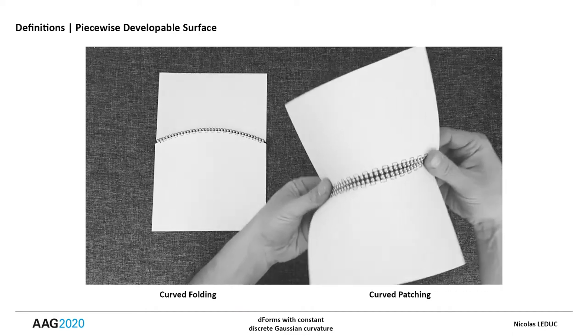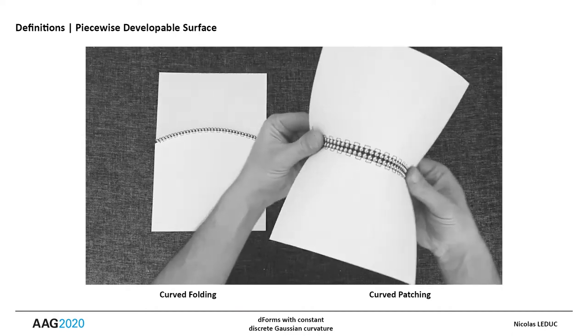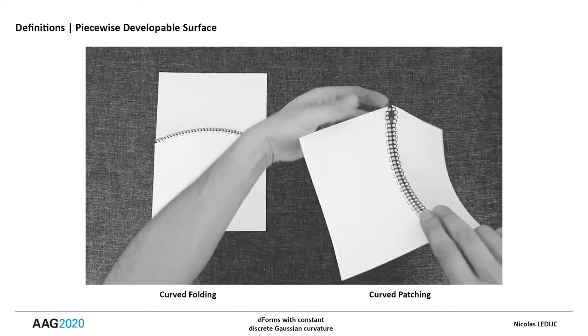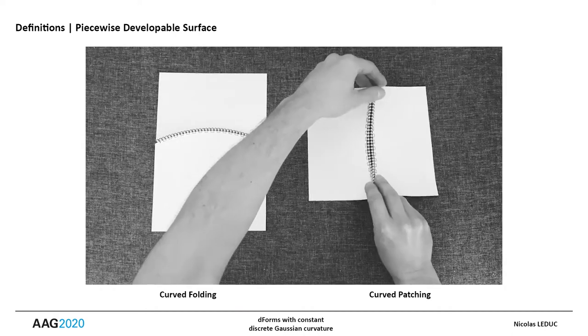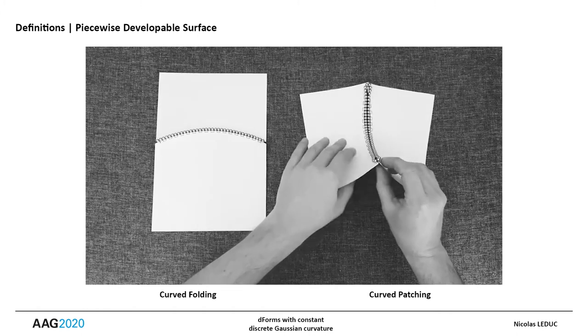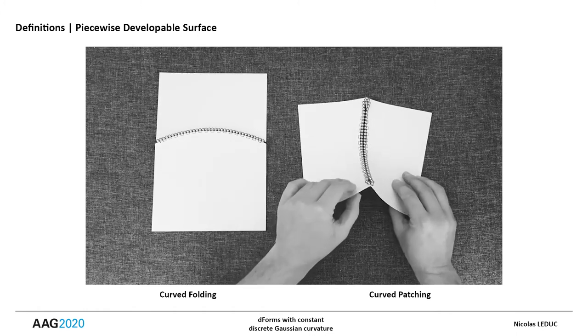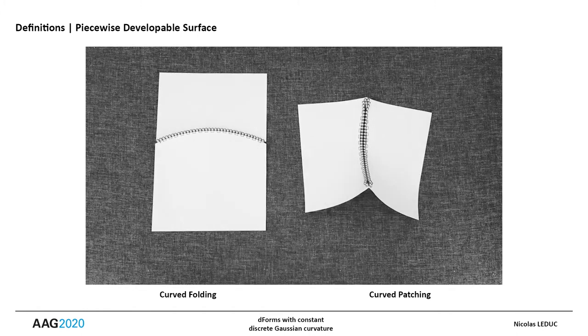On the contrary, curved patching is still a mechanism, but can no longer be totally unfolded. This is a good indication of the existence of Gaussian curvature in the edge.